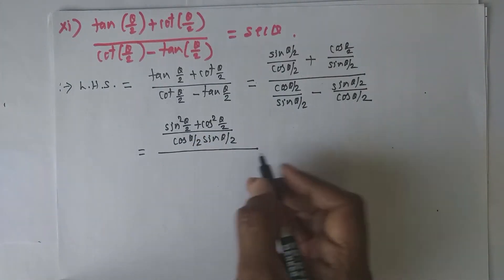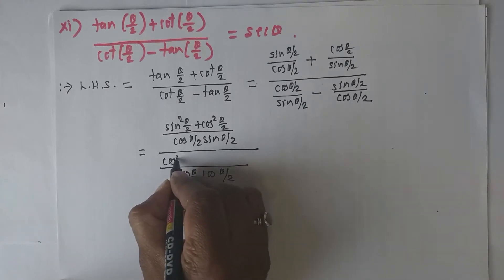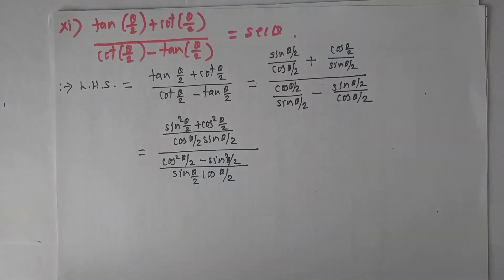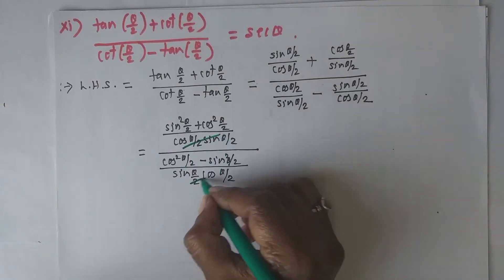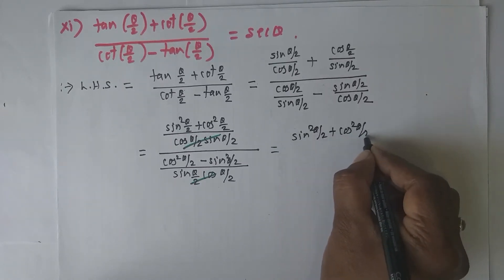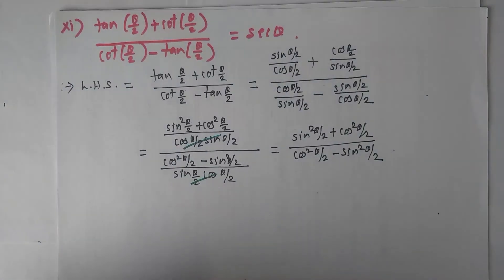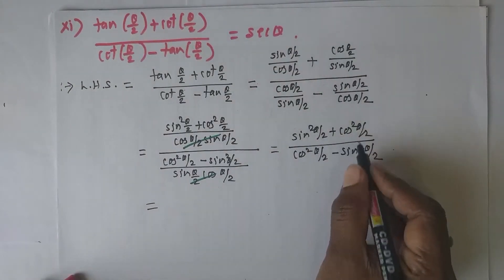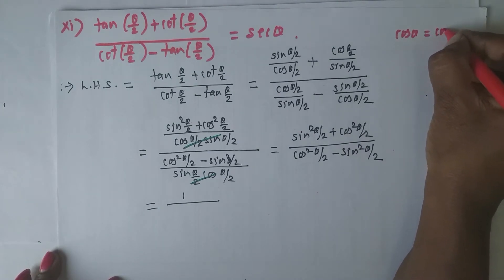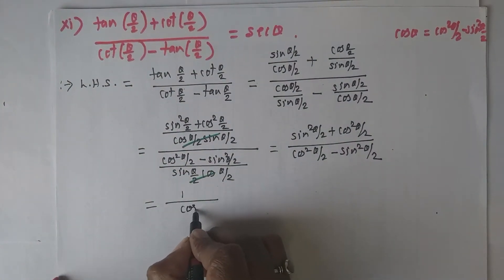In the denominator, take LCM = sin θ/2 · cos θ/2, and cross multiply to get cos²(θ/2) - sin²(θ/2). The common denominator cos θ/2 · sin θ/2 cancels from both numerator and denominator. What remains is [sin²(θ/2) + cos²(θ/2)] / [cos²(θ/2) - sin²(θ/2)]. By the first identity, sin²(θ/2) + cos²(θ/2) = 1. And using the half angle formula, cos²(θ/2) - sin²(θ/2) = cos θ.